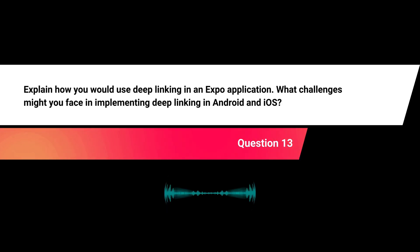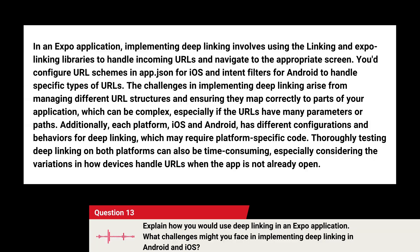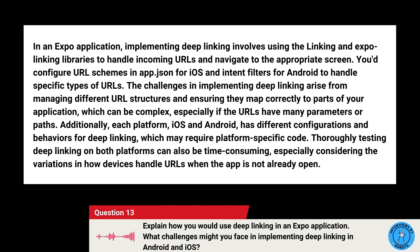Explain how you would use deep linking in an Expo application. What challenges might you face implementing deep linking on Android and iOS? In an Expo application, implementing deep linking involves using the Linking and Expo Linking libraries to handle incoming URLs and navigate to the appropriate screen. You'd configure URL schemes in app.json for iOS and intent filters for Android to handle specific types of URLs. Challenges arise from managing different URL structures and ensuring they map correctly to parts of your application, especially if the URLs have many parameters or paths. Each platform also has different configurations and behaviors for deep linking, and thoroughly testing on both platforms can be time-consuming.